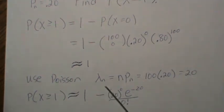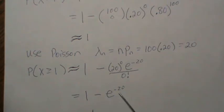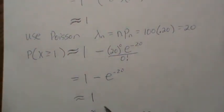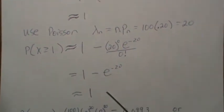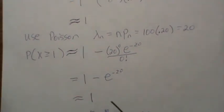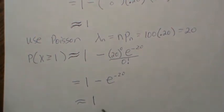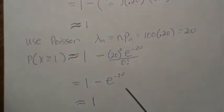And using the Poisson distribution, we let lambda be this quantity, which is 20. And then it's one minus the probability that zero happened in a Poisson model, which is one minus e to the minus 20, which is approximately one. Maybe not the best to illustrate the power of the approximation, but this illustrates how to use the Poisson.